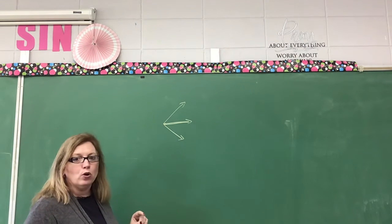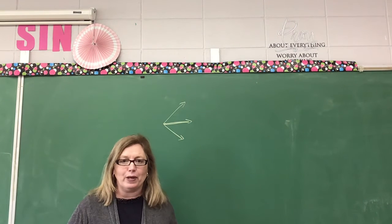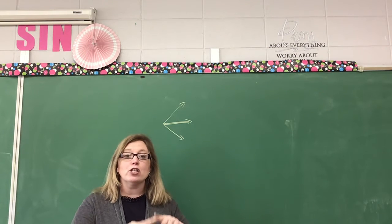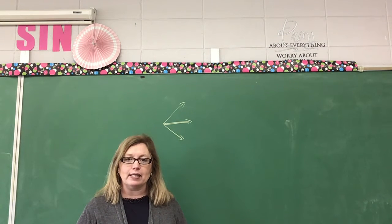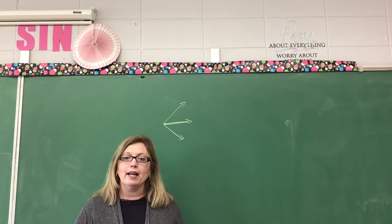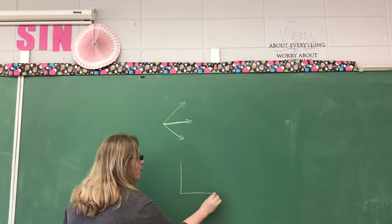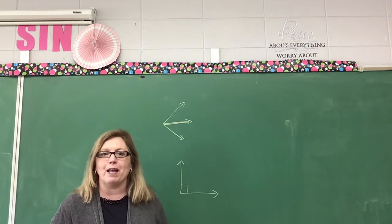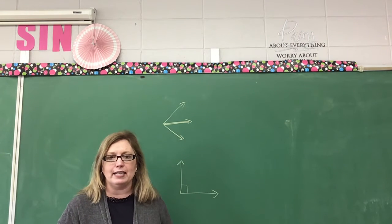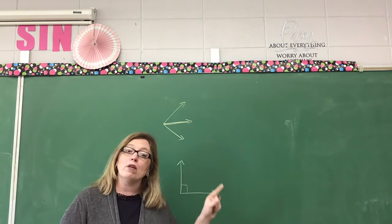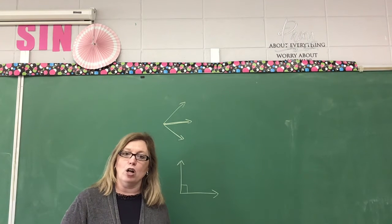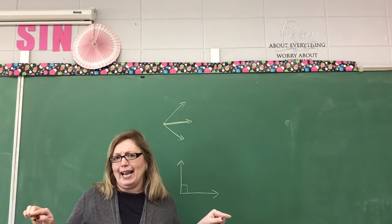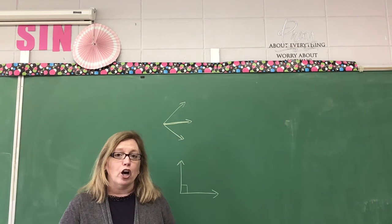If I have an angle that is less than 90 degrees, that angle is called acute. If I have an angle that is exactly 90 degrees, it will form a corner — it's called a right angle. In geometry, whenever you have a right angle, they make that little square in the corner, which means it's exactly 90 degrees. If an angle is more than 90 degrees, it's called obtuse. If it's exactly 180 degrees, it is called a straight angle.